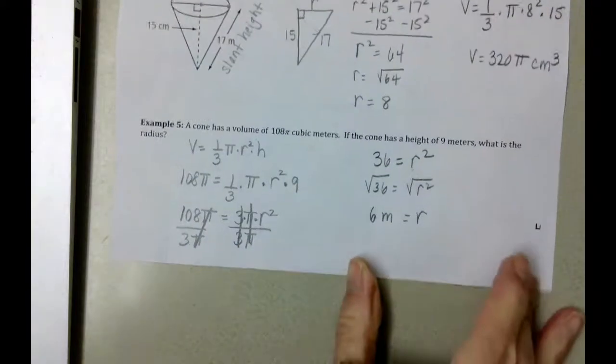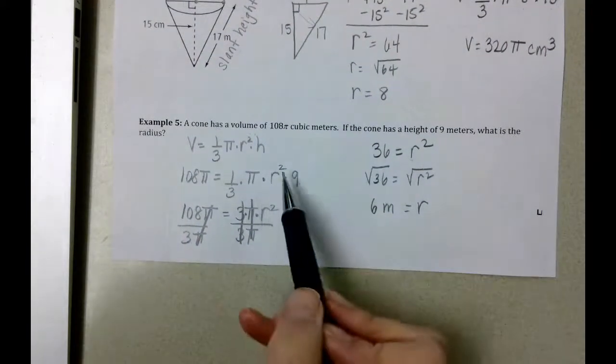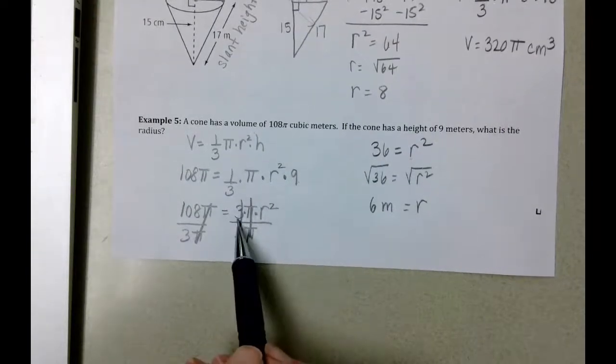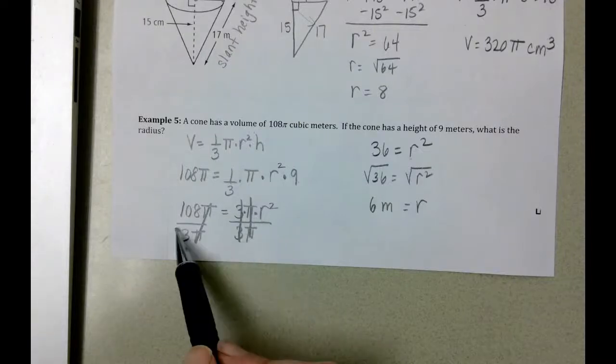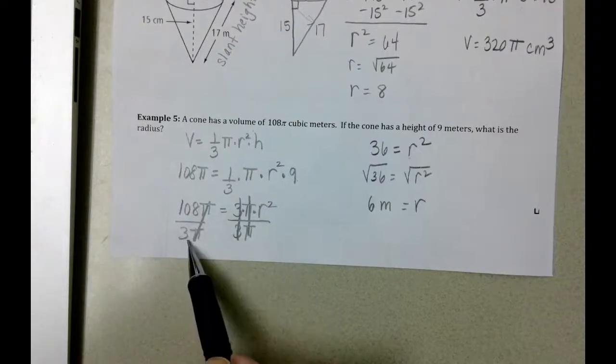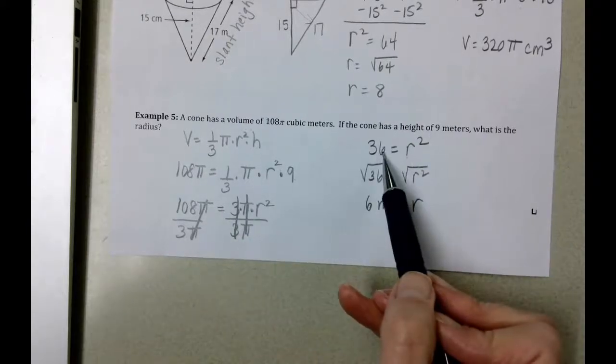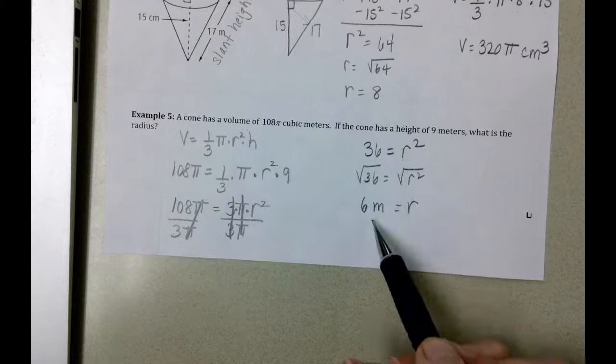One more time just to summarize, because I forgot to write that squared there. We multiplied 1/3 times 9 to get the 3. We divided both sides of the equation by 3 pi. When we did, 108 divided by 3 is 36. And then to finish, we had to take the square root to get our 6.